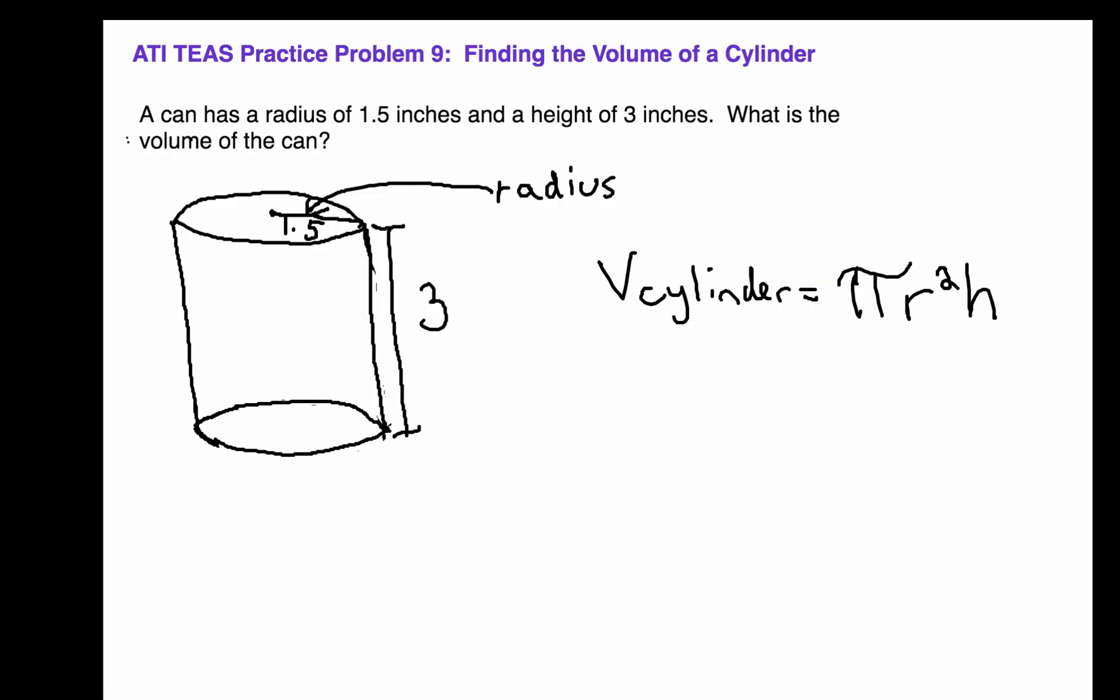Now that we've defined what a cylinder is and also discussed the volume of the cylinder, we can proceed with the problem. In the problem, we were given a can that had a radius of 1.5 inches and a height of 3 inches.